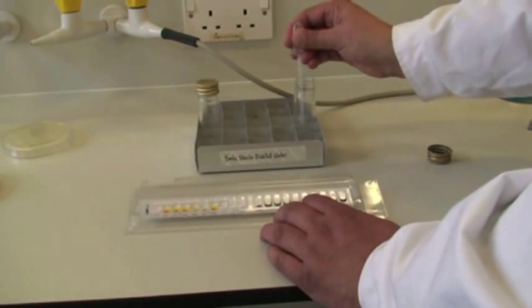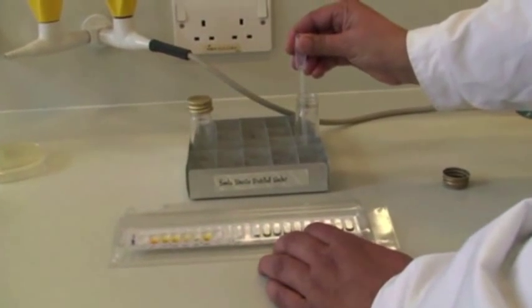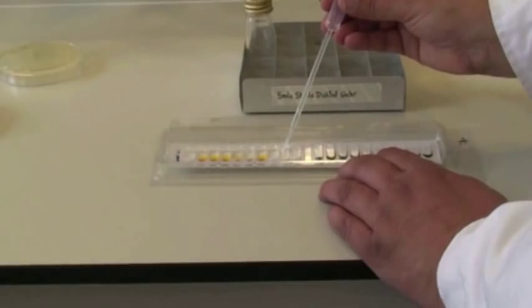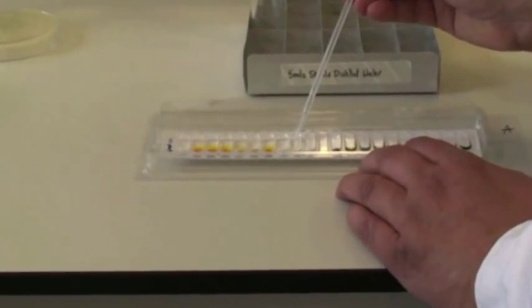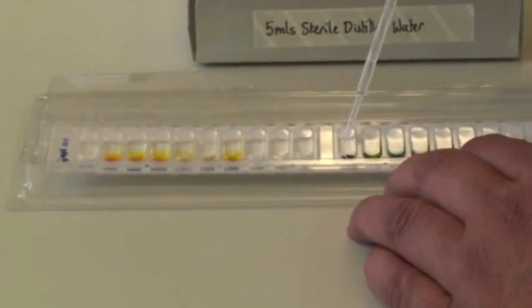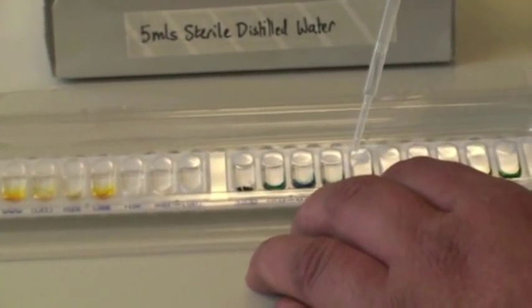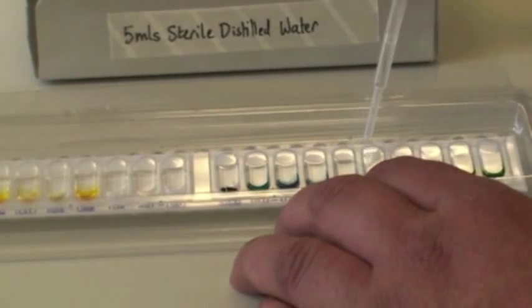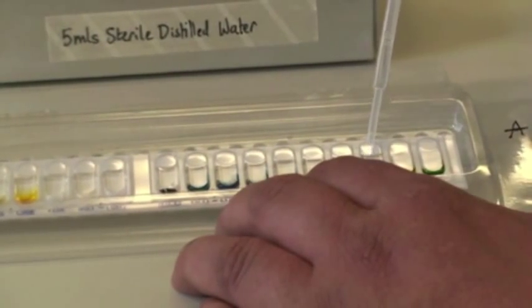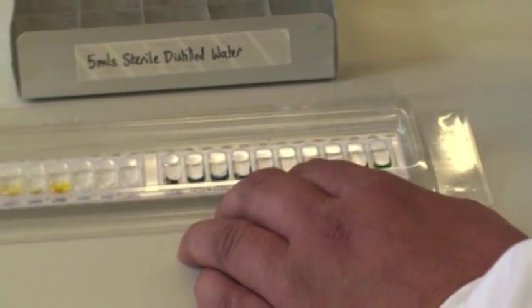Go back and get some more suspension into your pipette, and then fill in the rest of the cupules starting with indole, always doing it in that left-hand corner, which minimizes the air bubbles that you'll get, up until the very last one, arabinose.